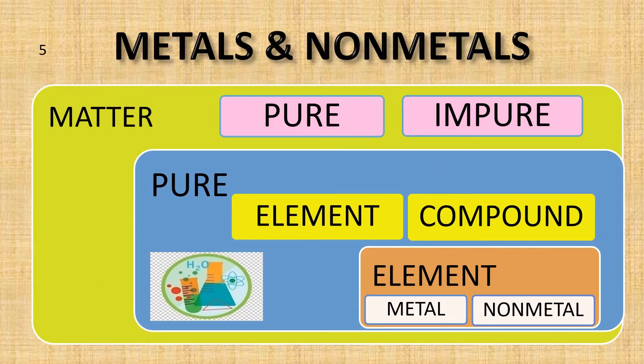Metals and non-metals. The universe is made up of matter and energy. Matter is anything that occupies space and has mass. Matter exists as solid, liquid, or gas, and also as pure and impure. The pure form of matter is classified as element and compound.